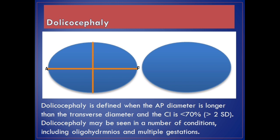Dolichocephaly is defined when the AP diameter is longer than the transverse diameter and the CI is less than 70%, more than 2 SD. Dolichocephaly may be seen in a number of conditions, including oligohydramnios and multiple gestations.